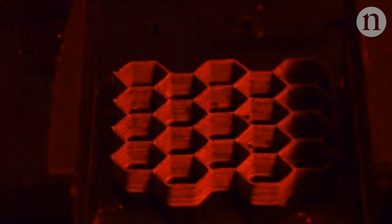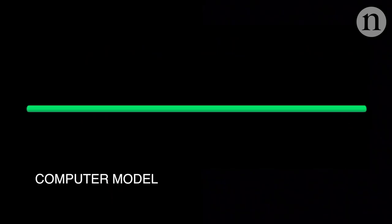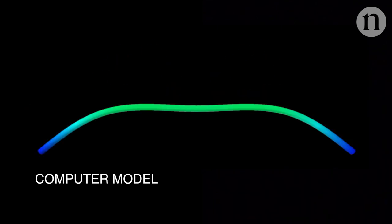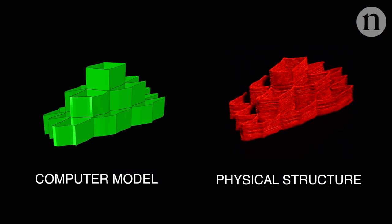Scientists added a red filter to film the movements. The system is so precise that researchers can program a computer model to move in a certain way, print it out and the same movement can be replicated exactly in the physical structure.